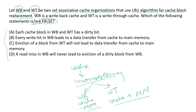The first statement says each cache block in the write-back cache and the write-through cache has a dirty bit. This statement is false because in the write-through cache we update both simultaneously, so there is no dirty bit — it is only present in the write-back cache. So this statement is false and will be part of our answer.